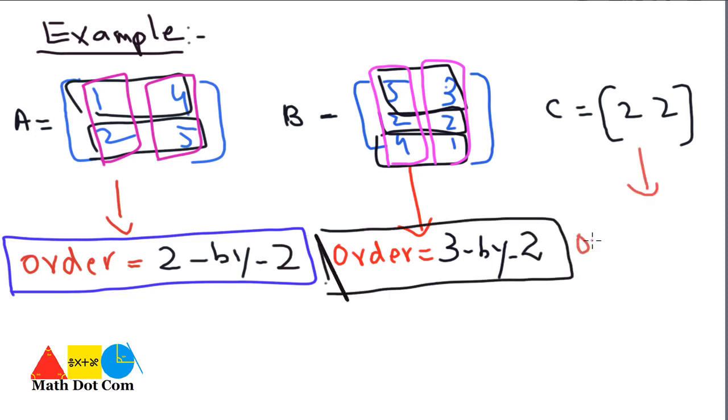Then comes the last matrix. Order equals the number of rows are one, so we'll write one by, and the number of columns are two, so one by two is the order of the matrix.